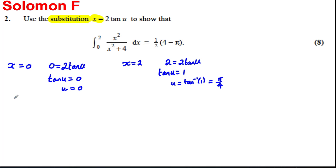The next thing is if x was equal to 2tan(u), then let's differentiate: dx by du must be 2sec²(u). So therefore dx as the subject is 2sec²(u)du.